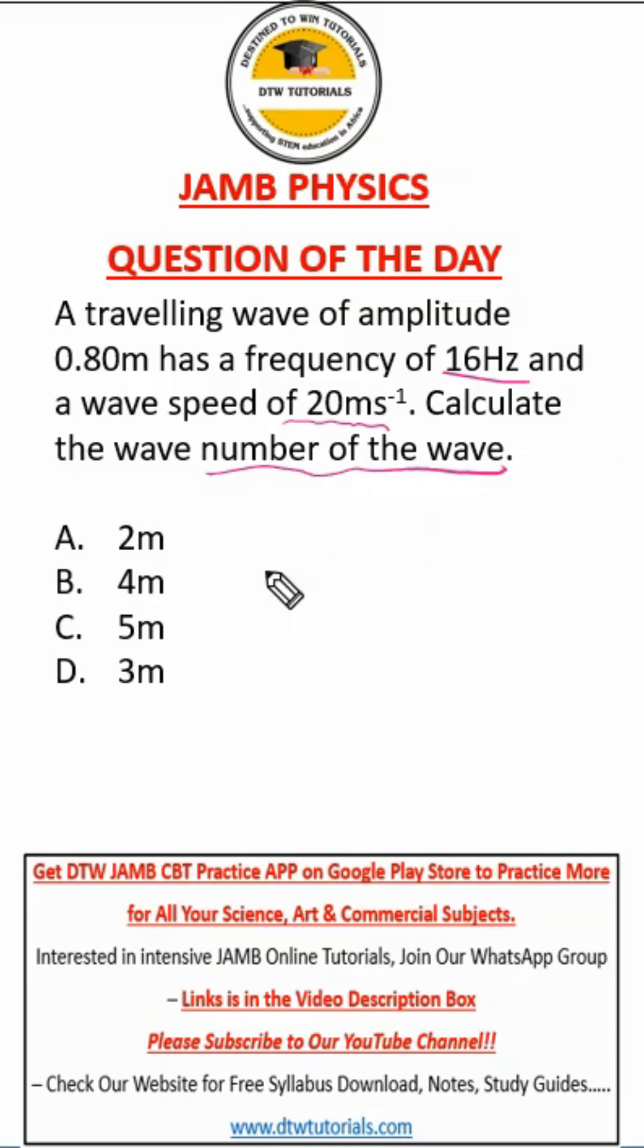Remember the formula for wave number? It is k equals 2π over wavelength. From here, you can see we don't have wavelength, but we have amplitude, frequency, and speed. I remember this formula: speed of a wave is f lambda, that's frequency times wavelength. From here, we can find our wavelength. So wavelength is v over f.